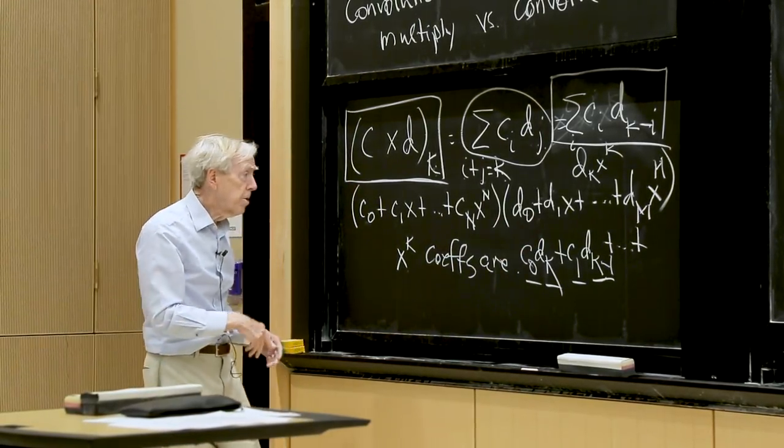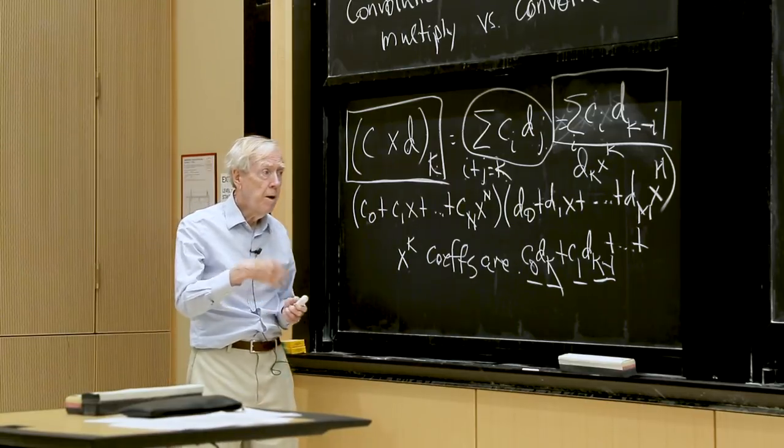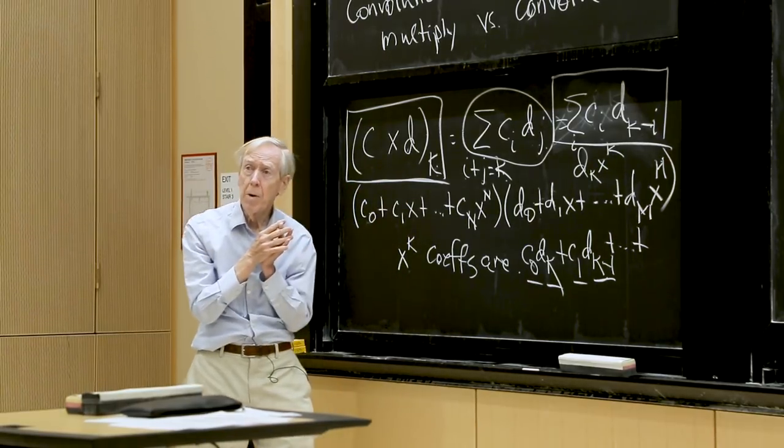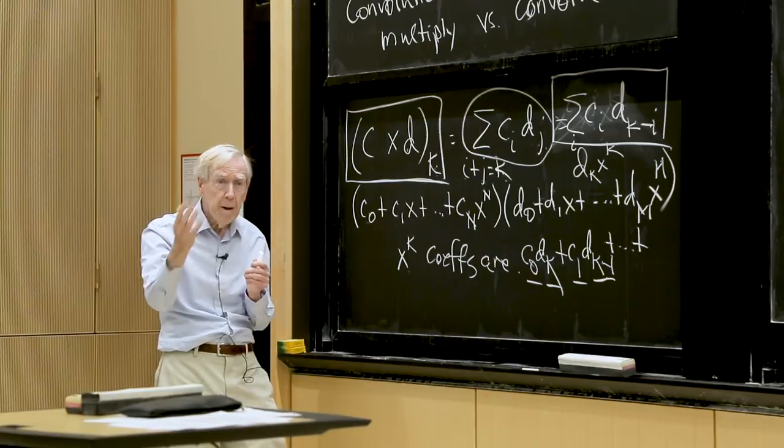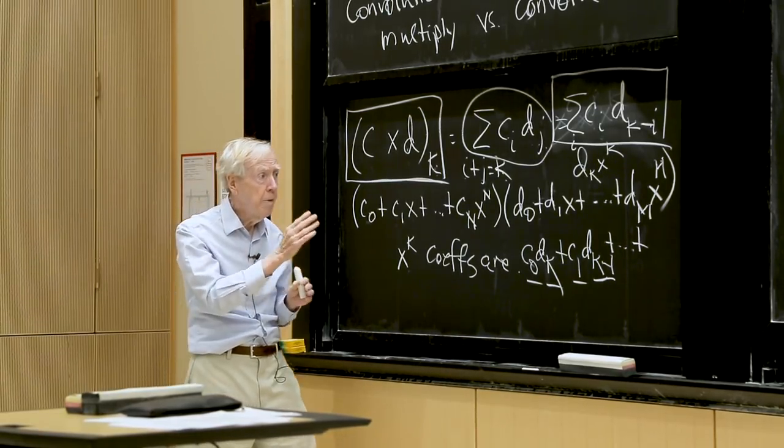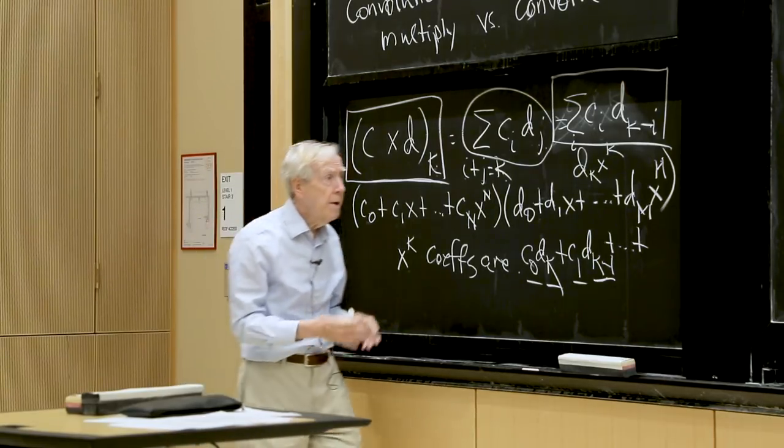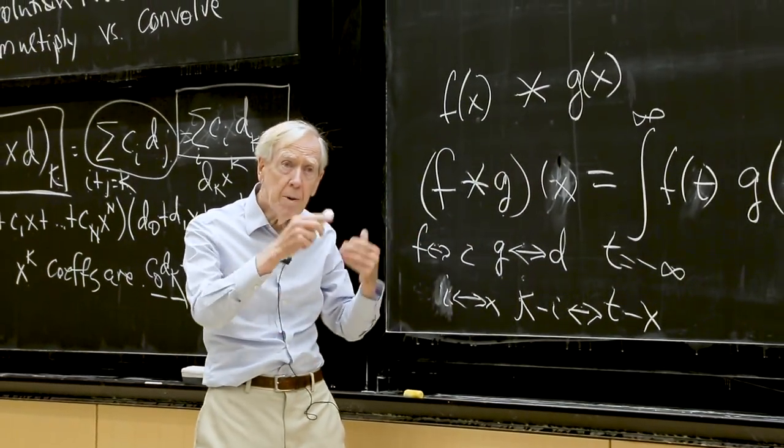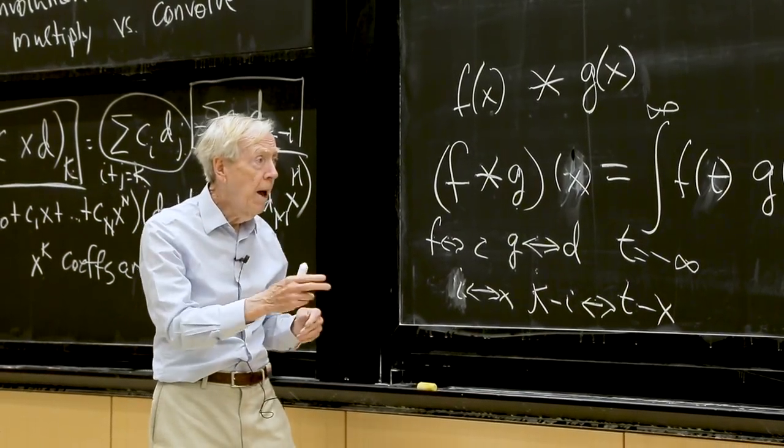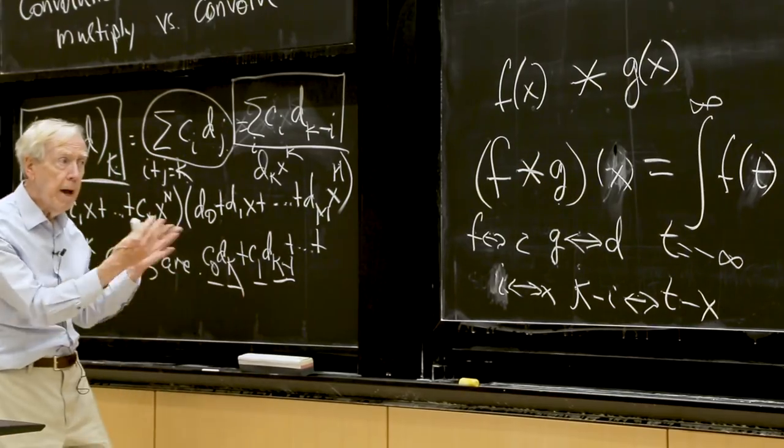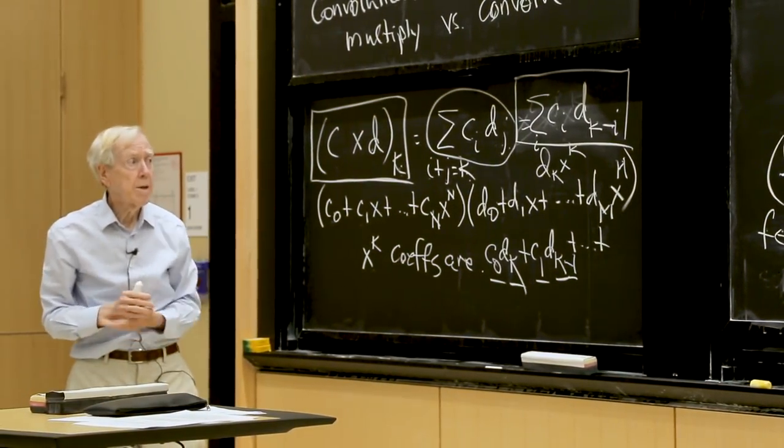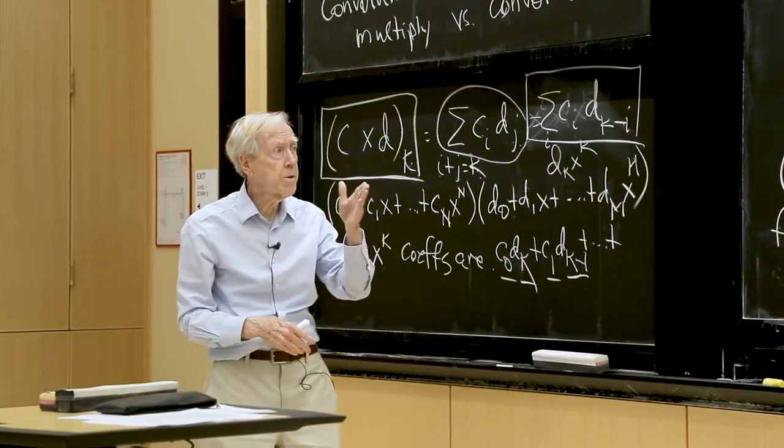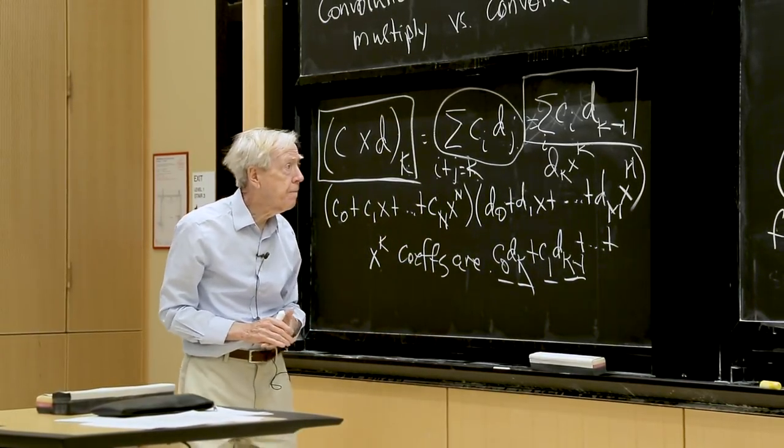And you didn't make it cyclic. So a cyclic convolution, if this has n components and this has n components, then the convolution has n components. n is the key number there, the length of the period. And similarly over here, if f is 2π periodic and g is 2π periodic, then we might want to do a periodic convolution and bring it, get an answer that also has 2π, period 2π. So you could compute the convolution of sin(x) with cos(x), for example.